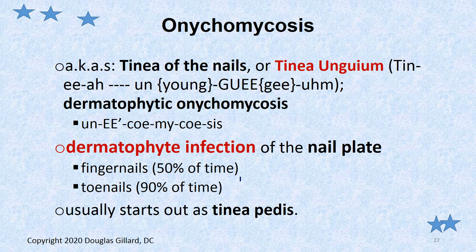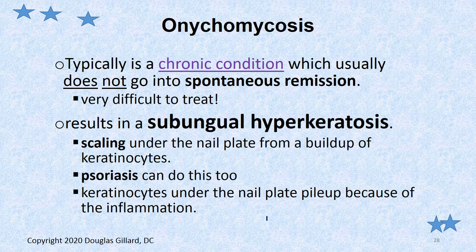Let's talk about onychomycosis — also called tinea unguium or tinea of the nail. It is a dermatophyte fungal infection of the nail plate, and the nail bed as well. It usually hits the toenails 90% of the time; about 50% of the time it can get into the fingernails. It oftentimes will start out as simple athlete's foot, which is very amenable to treatment. But this condition's not — you can get rid of the athlete's foot, but it ends up inside your nails. It is a chronic condition because if it gets underneath your nails and in your nail plate, it's really hard to get rid of because there's no blood there — it's a very avascular area.